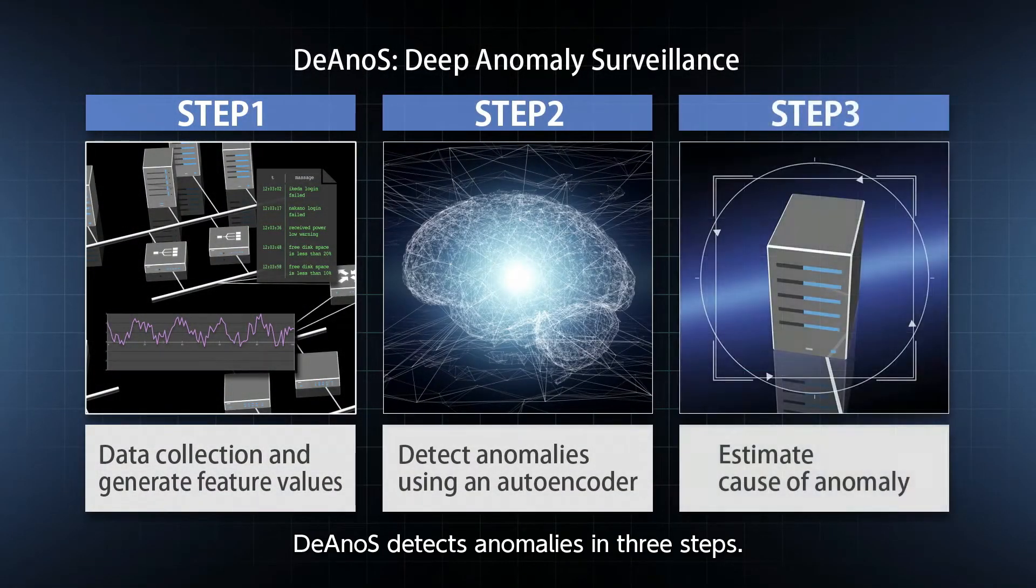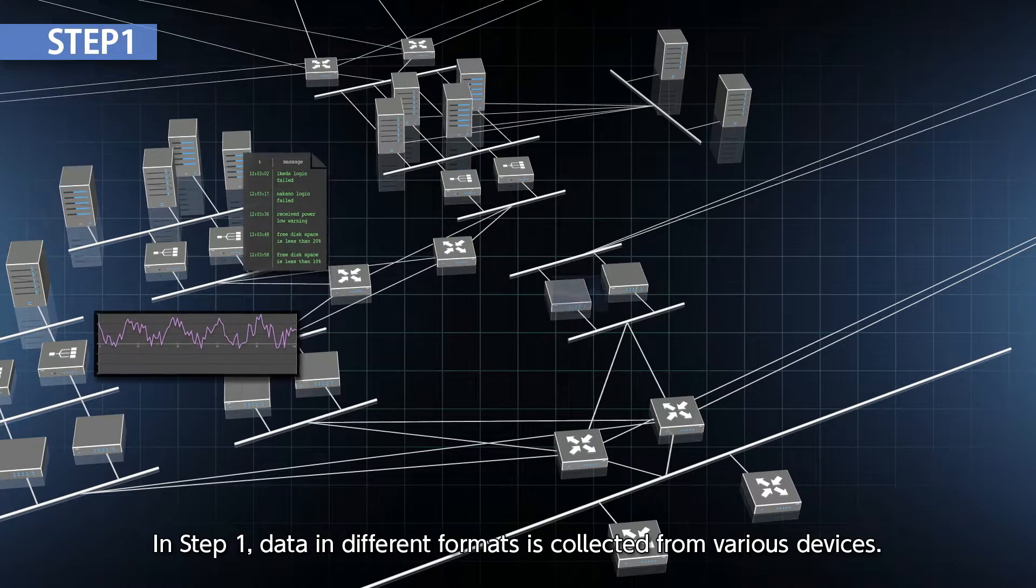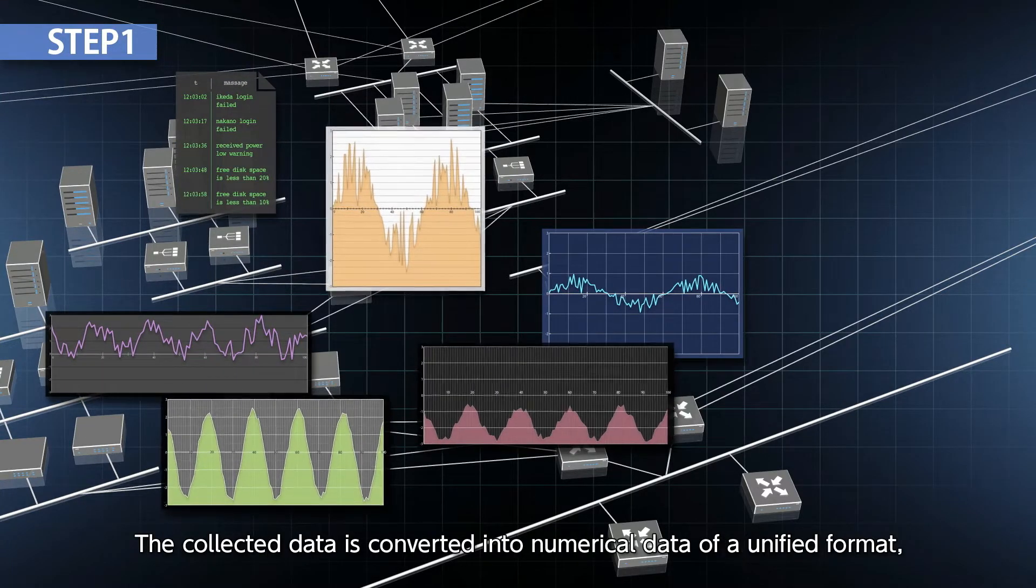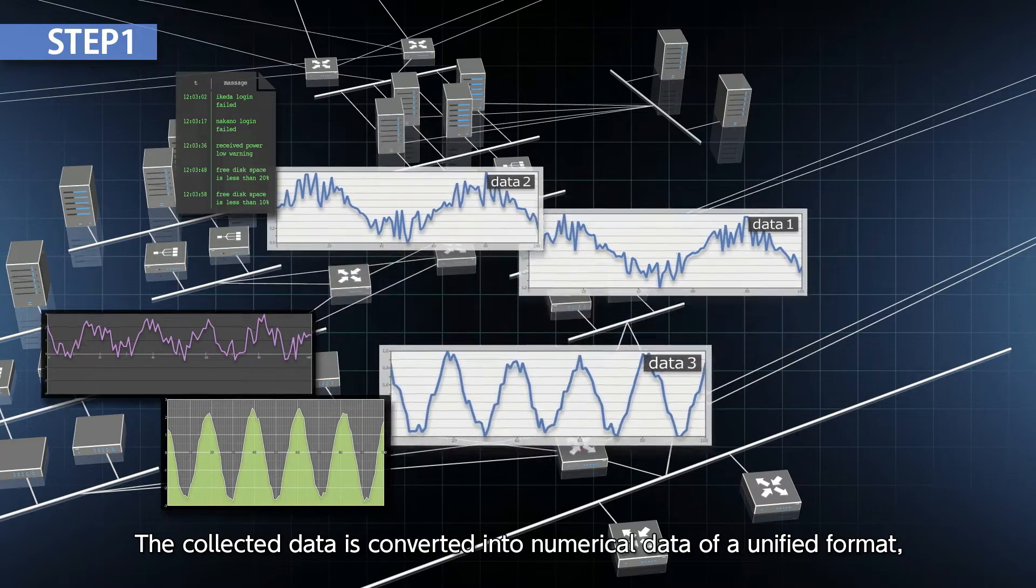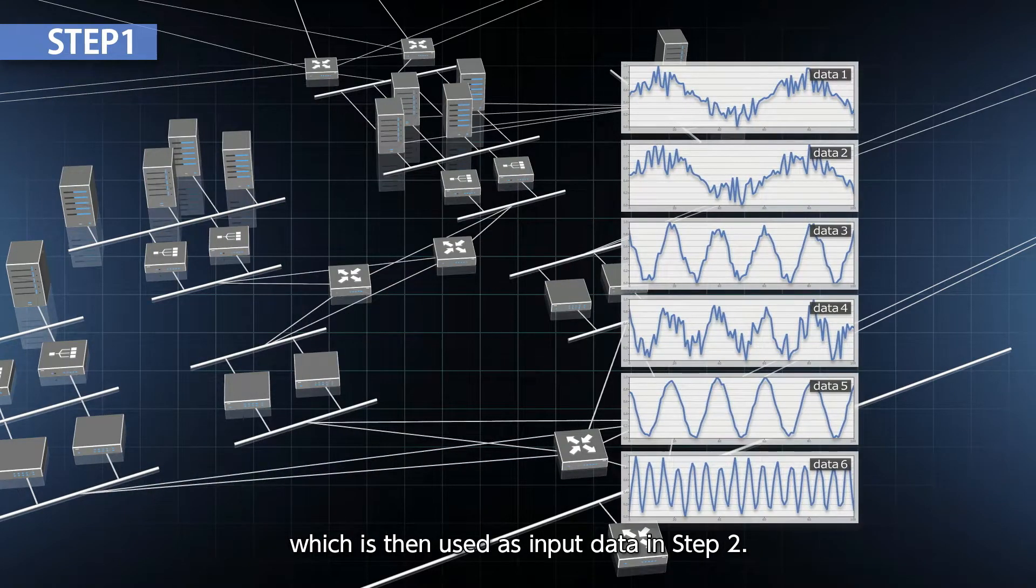DeAnoS detects anomalies in three steps. In step one, data in different formats is collected from various devices. The collected data is converted into numerical data of a unified format, which is then used as input data in step two.